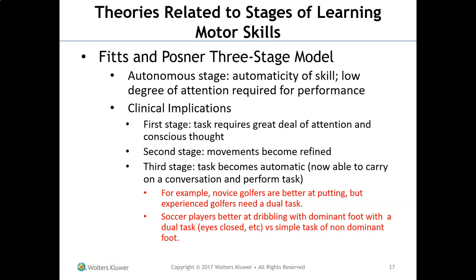For example, novice golfers are actually better at putting, while experienced golfers need a dual task — they need distraction or noise because putting is too simple for them. They need some kind of dual task to become better. Similarly, soccer players are better at dribbling with their dominant foot when given a dual task — eyes closed, dribbling — versus the simple task of using their non-dominant foot.